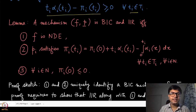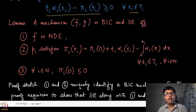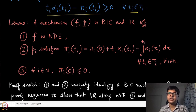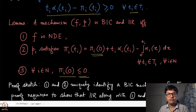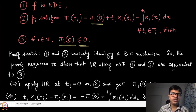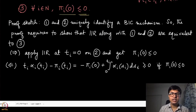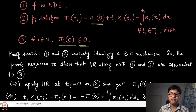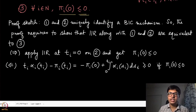We can extend Myerson's characterization for BIC mechanisms to BIC and IIR mechanisms. The mechanism (f, p) is BIC and IIR if and only if: conditions one and two come directly from the characterization of BIC, and the third condition says the constant term in the integral formula should be non-positive — analogous to what we saw in the individual rationality condition in the prior-free setting.